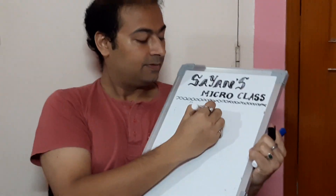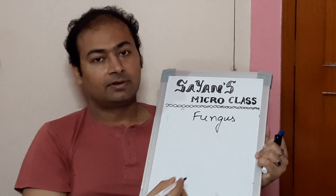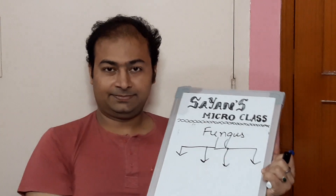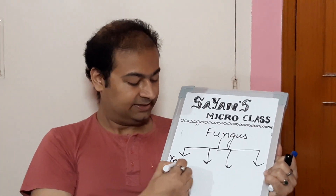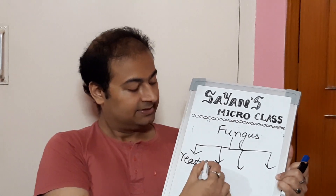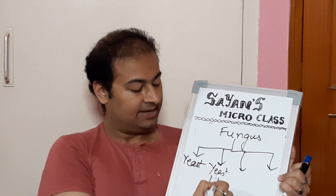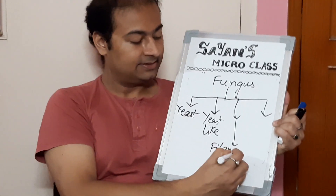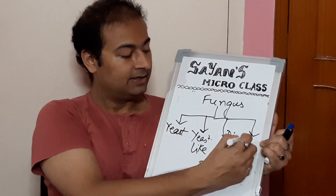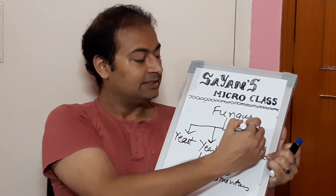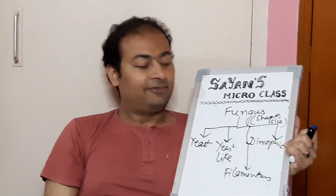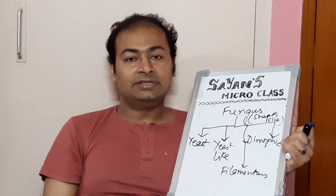When we go to the study of fungus, fungus can be four types. One is yeast, second is yeast-like, the third is filamentous, and the fourth category is dimorphic. This classification is based on shape and size, so morphologically fungus can be classified into these four categories.